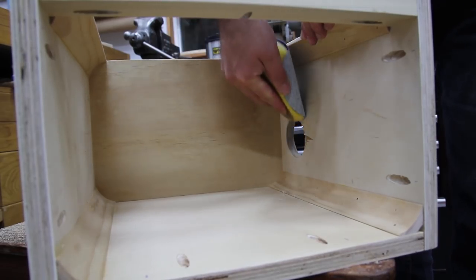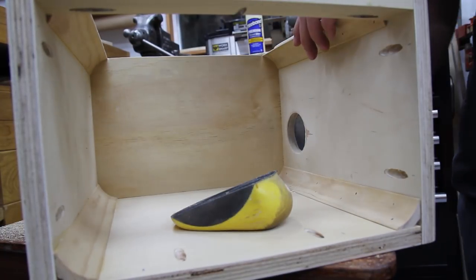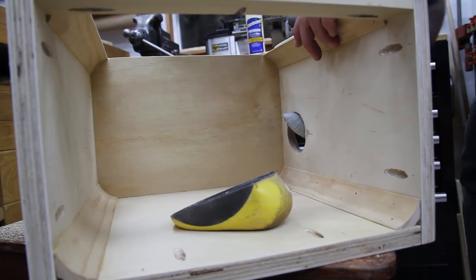So this hook and loop sanding block uses the same sanding discs as my random orbit sander, and it's probably one of the most used tools in my whole shop.